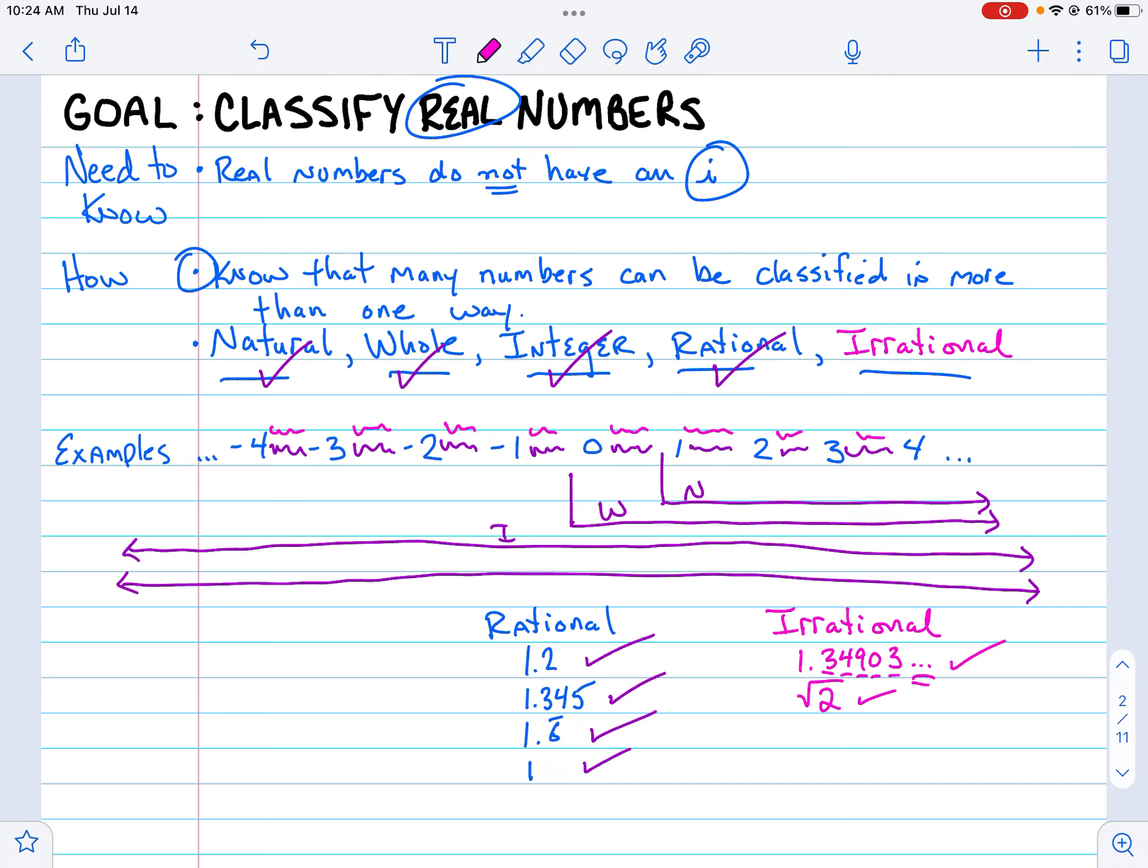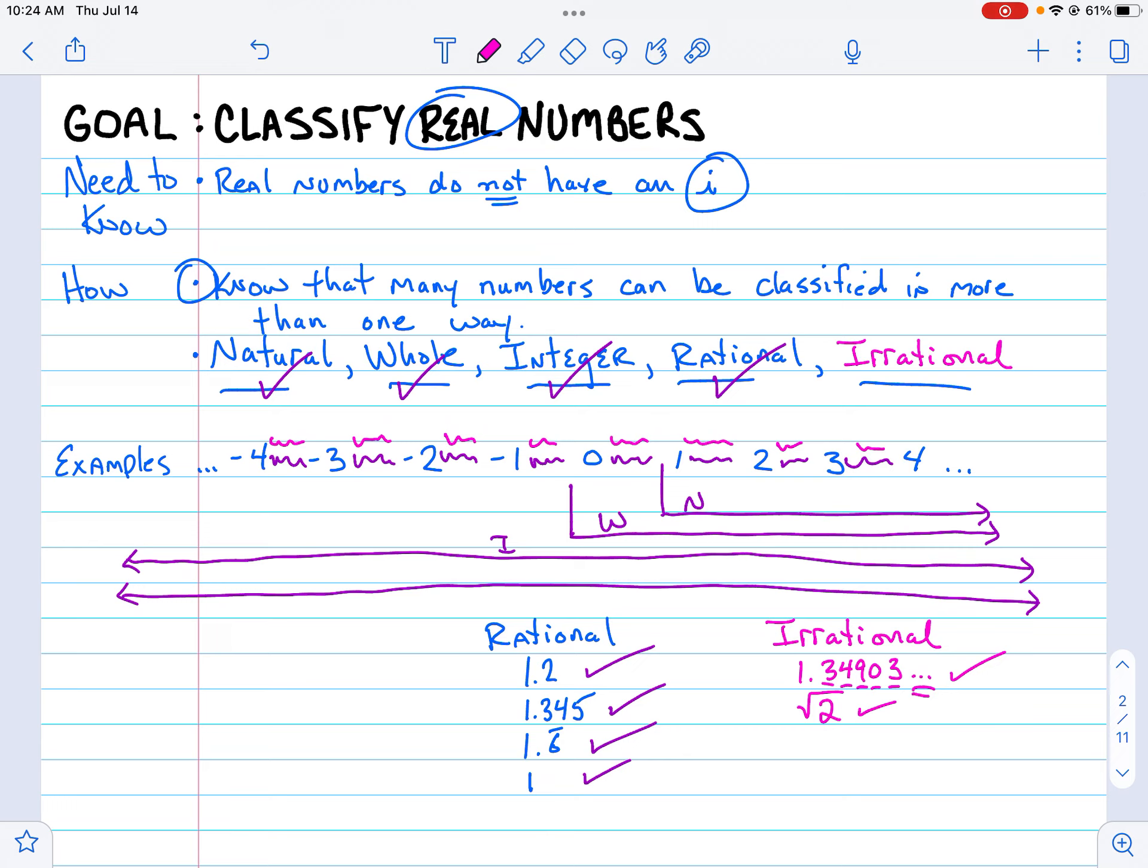Again, rational, integer, whole, and natural can blend together and can kind of overlap. Irrationals are their own thing, and all of them are examples of real numbers.